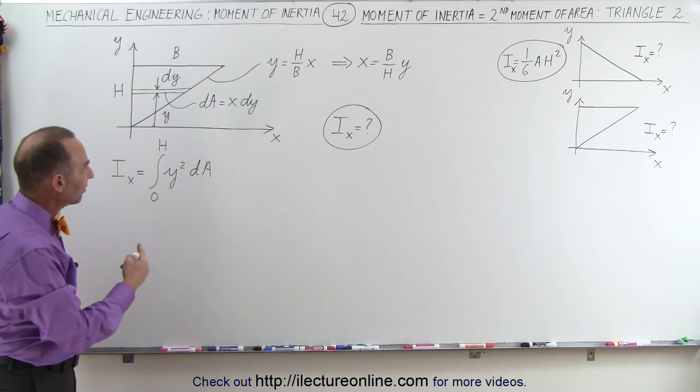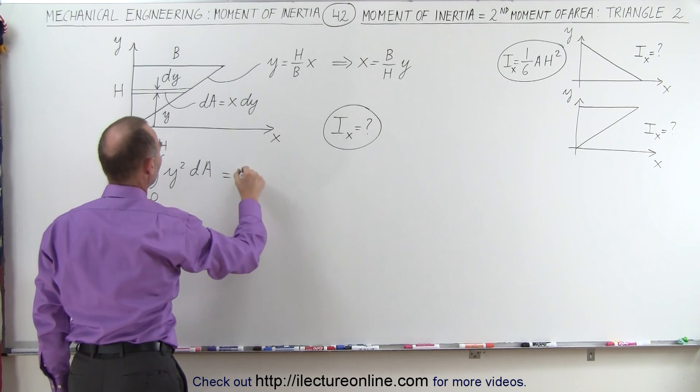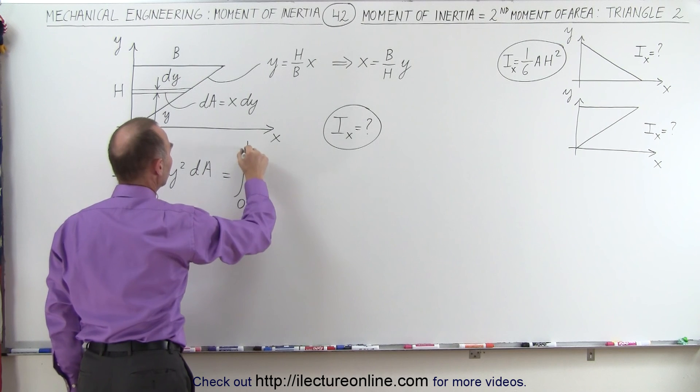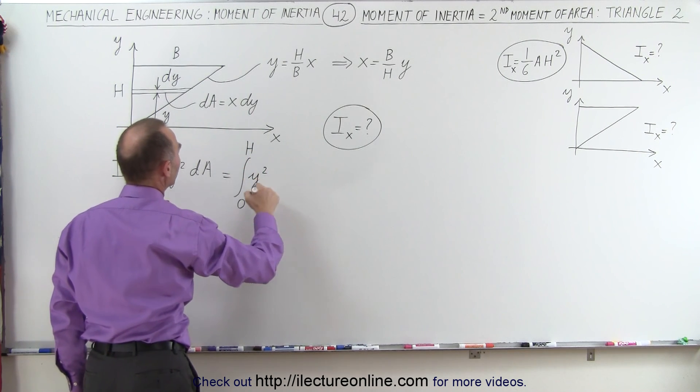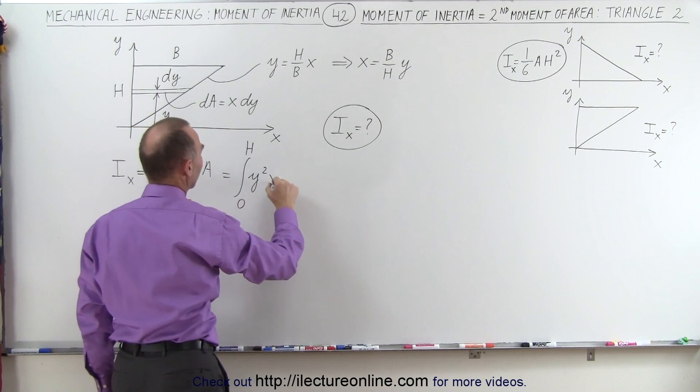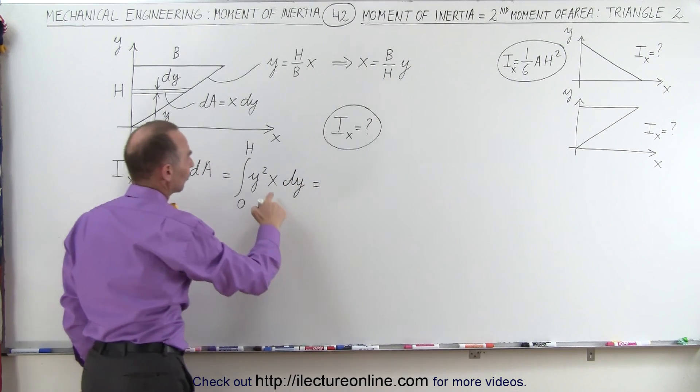So we're going to replace dA with what dA is equal to. This becomes equal to the integral from 0 to h of y squared. Instead of dA, we're going to write x times dy. Now, of course, x can be written in terms of y like this, so we'll make that substitution.